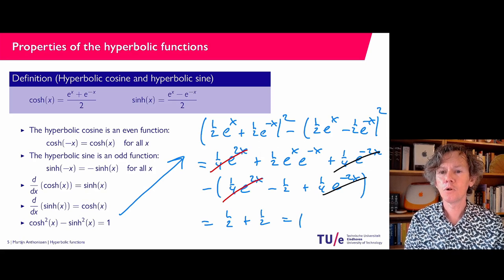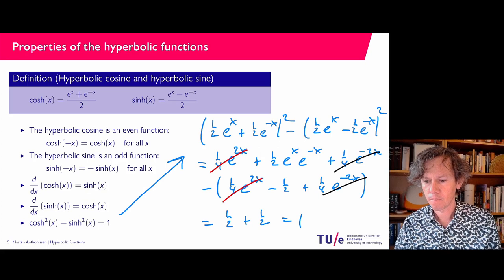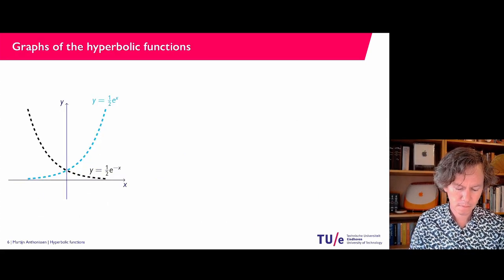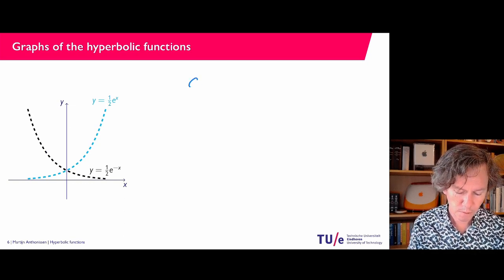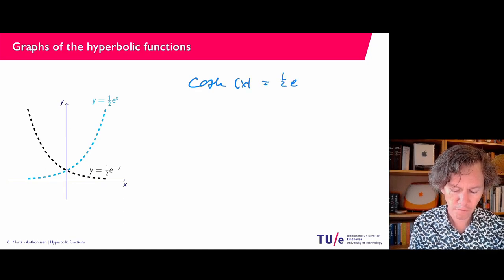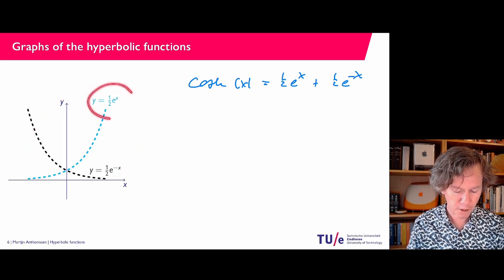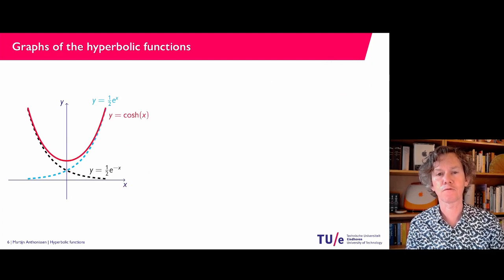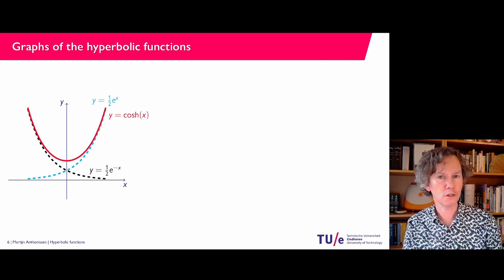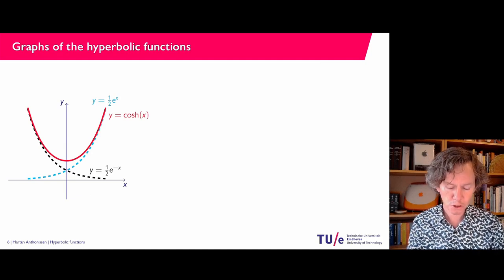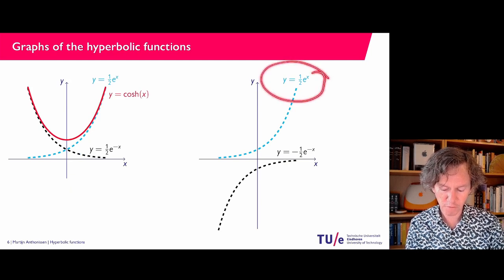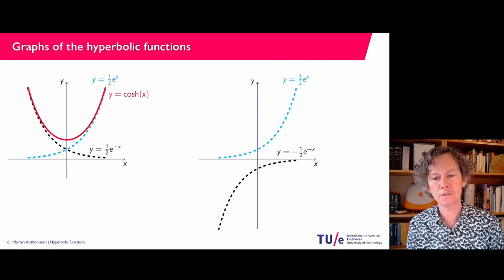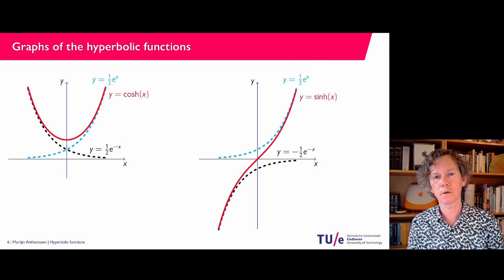Now let's look at the graphs of these functions. To find the graph of cosine hyperbolic, we use that cosh(x) equals one-half e^x plus one-half e^{-x}. In the graph, one-half e^x and one-half e^{-x} are drawn separately, and adding them together gives the cosine hyperbolic curve — which looks like a hanging chain. For sine hyperbolic, adding its two component functions gives a curve that passes through the origin with this characteristic shape.